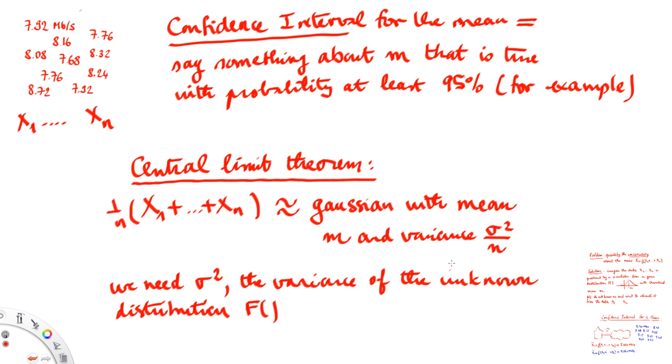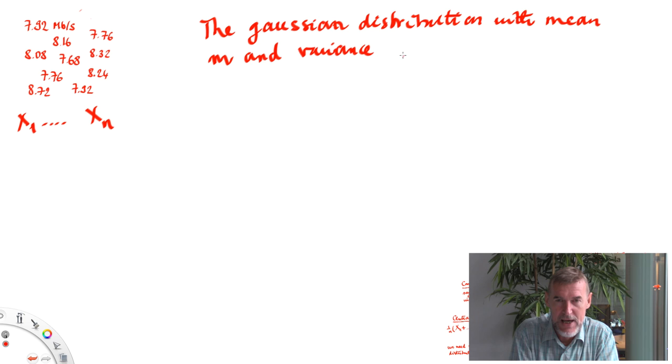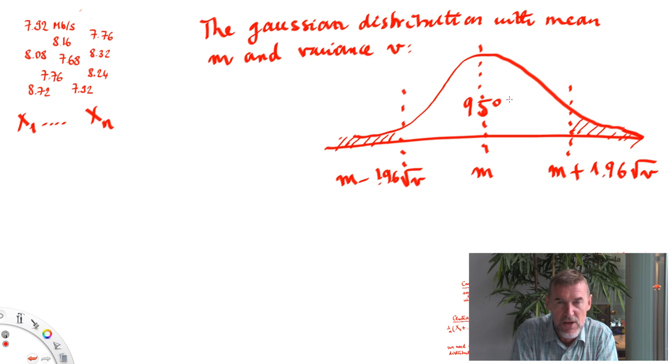More precisely, this theorem holds if the variance of the unknown distribution f or unknown simulator is finite. The statement in the theorem requires to be able to know the variance sigma square or some estimate of it. Now we know that the Gaussian distribution is located with probability 95% in the interval that ranges from the mean minus 1.96 the standard deviation and the mean plus 1.96 the standard deviation. The standard deviation is the square root of the variance. 1.96 is, in some sense, a magic number that comes from the Gaussian distribution.